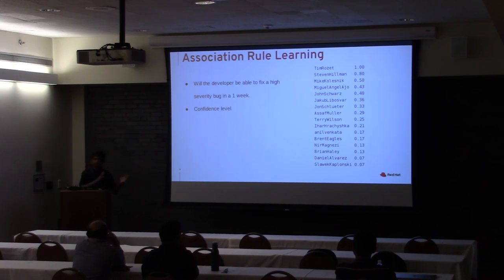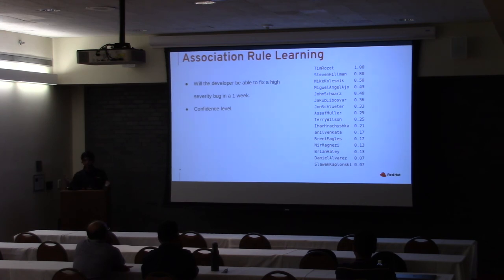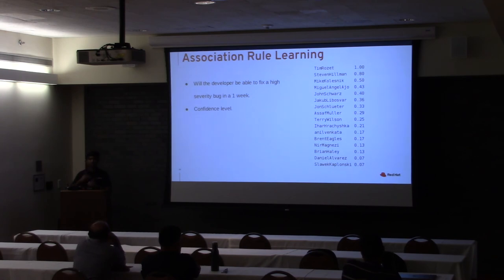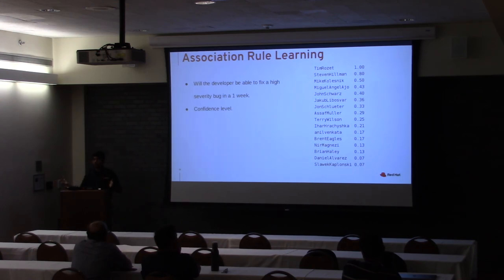This is more useful from a management or bug-assignment perspective. Tim Roget has a 100% confidence of fixing that bug within a week; Steve Hillman has about 80%. This tells you how confident you can be in a developer fixing a specific severity bug within a given time interval. You can ask further questions — for example, if it's not urgent but medium severity and your process allows two weeks, you can study that relation too.